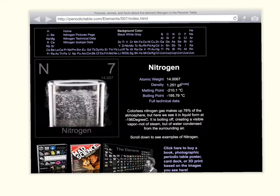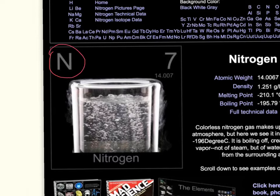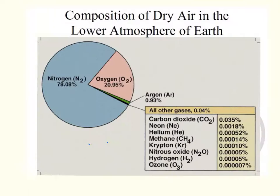Here is a close-up picture of nitrogen — this is nitrogen in its liquid form. The symbol for nitrogen is N. Its atomic number is 7 and its atomic mass is 14.007 amu. Nitrogen is a gas at standard temperature and pressure and it makes up 78% of the air that we breathe. Nitrogen is the first most abundant element in the Earth's atmosphere.